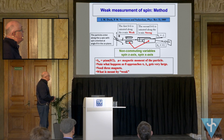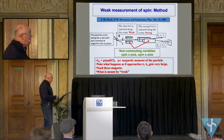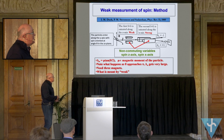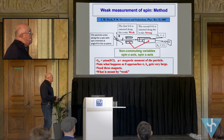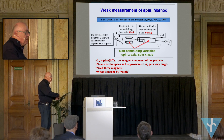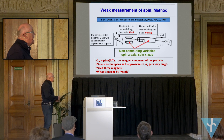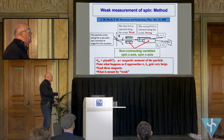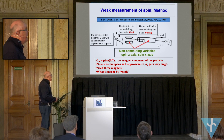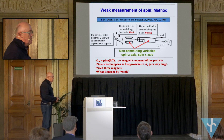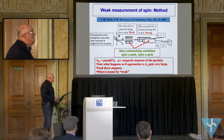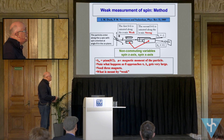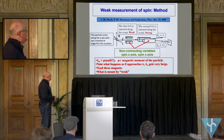The weak value for this has been calculated and given in this paper. Basically, the weak value is μ tan(θ/2). The fact that it's a tangent obviously allows this amplification: as theta approaches pi, the tangent value blows up, and that's where you get this amplification factor. Mu is proportional to the magnetic moment of the particle plus other small constants.